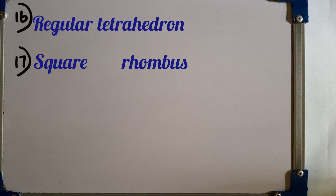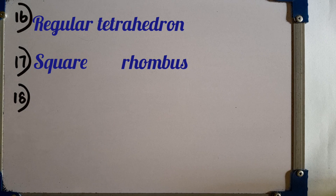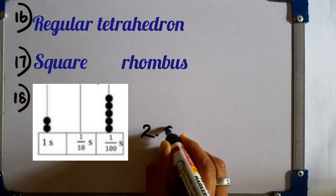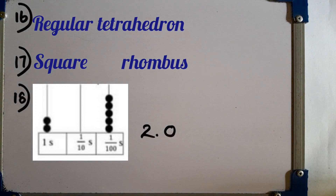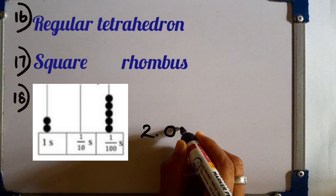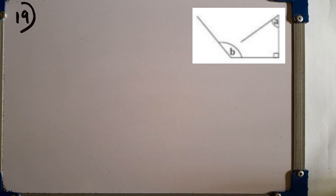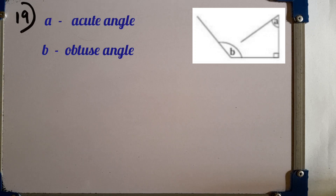Question number 18: write down the number represented by the abacus given below. The number is 2.05 — two point zero five is the decimal number. Question number 19: write the type of each angle denoted by the letters A and B. A is an acute angle and B is an obtuse angle.